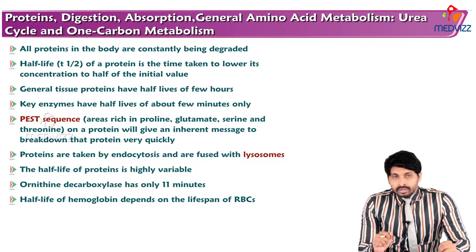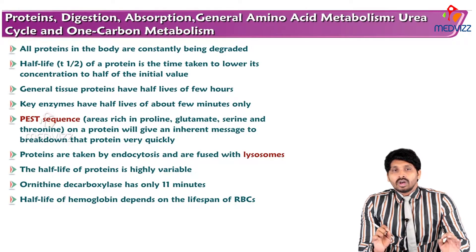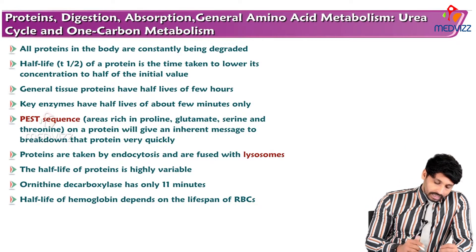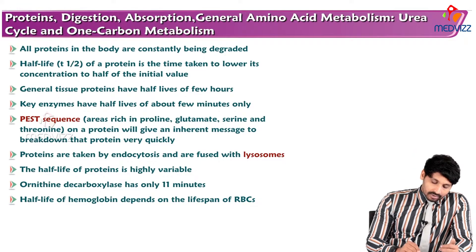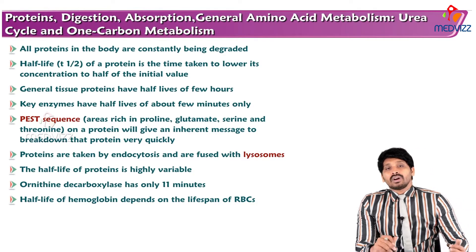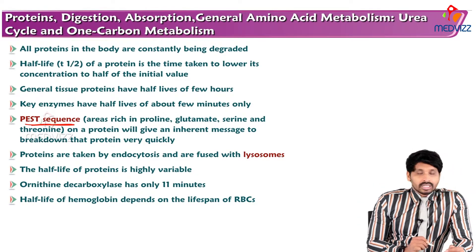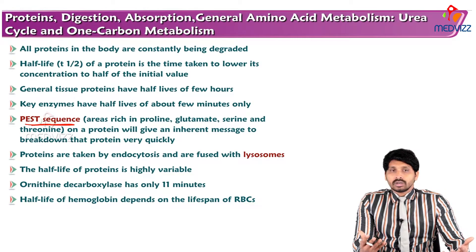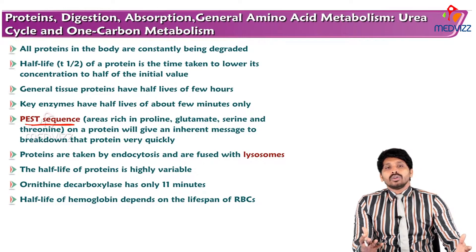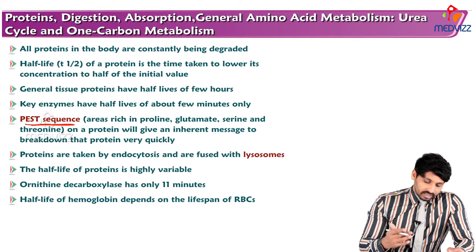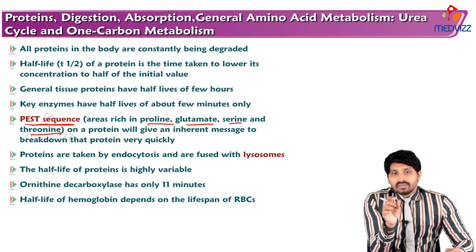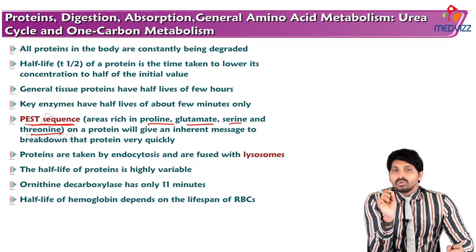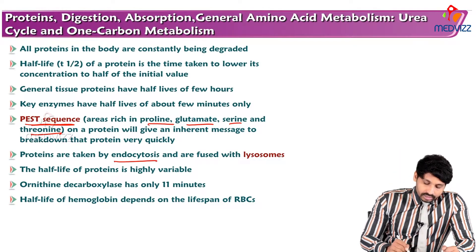All proteins in the body are constantly being degraded because every protein has its own half-life. The half-life of a protein is the time taken to lower its concentration to half of the initial value. General tissue proteins have half-lives of a few hours, whereas key enzymes have half-lives of only a few minutes. The PEST sequence — areas rich in proline, glutamate, serine, and threonine — gives a signal that the half-life of the protein is ending and it must be broken down quickly.